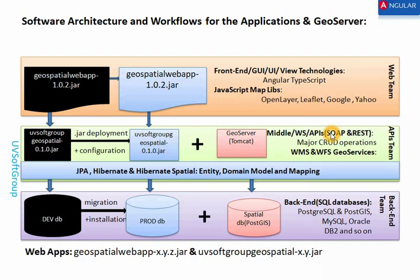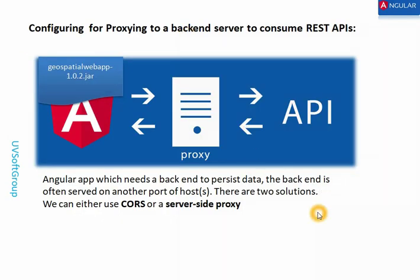You can use different map sources and build your application based on what type of maps you need. Google Maps has some restrictions on the number of hits. If you have an enterprise application and need more hits, you need to get a license from Google, and then you can do as much as you need with that.